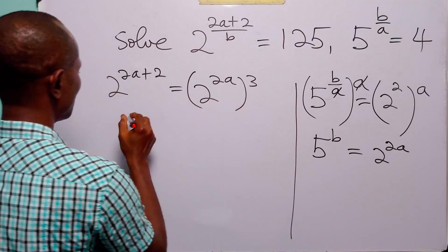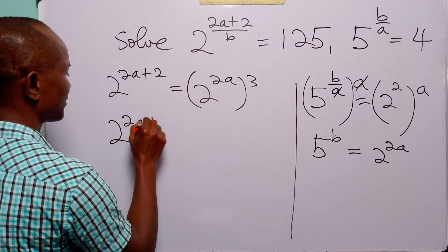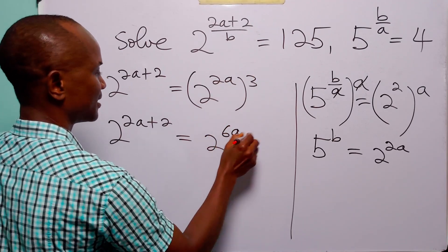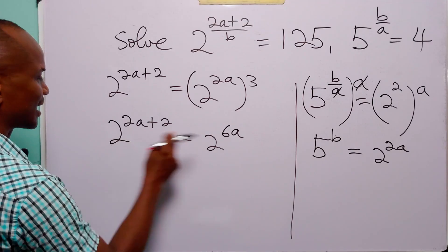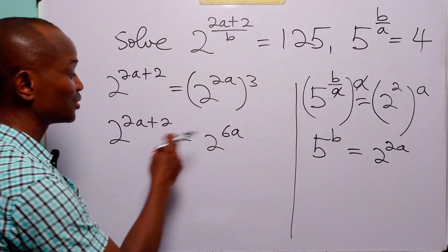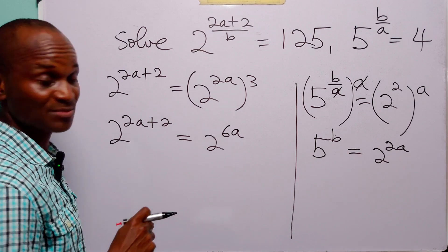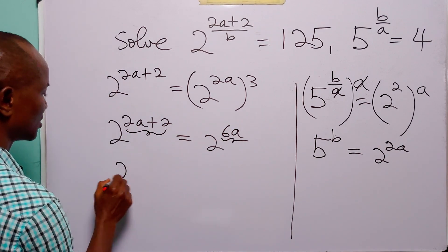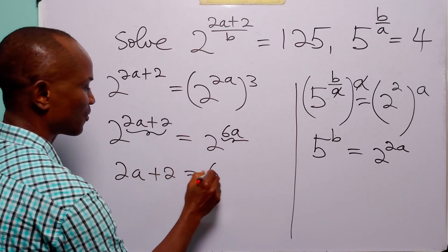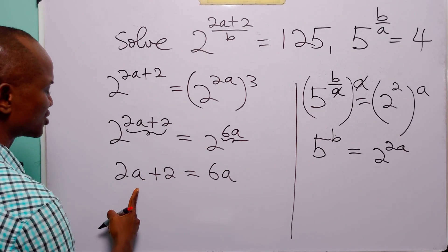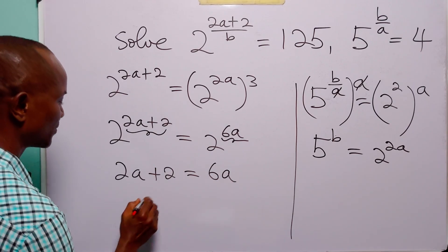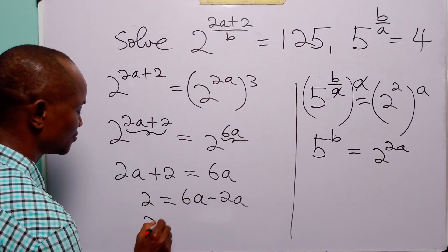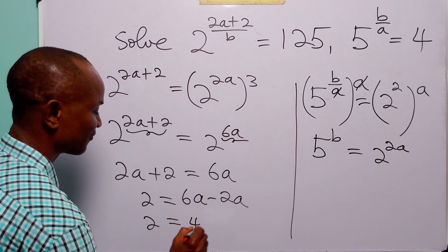When we expand this bracket, we have 2 to the power (2A + 2) equals 2 to the power 6A, because 2 times 3 is 6. Now that we have the same base — 2 — on both sides, we can equate the exponents: 2A + 2 equals 6A. Subtracting 2A from both sides gives 2 equals 6A minus 2A, which is 4A.